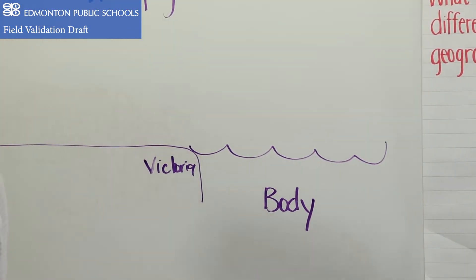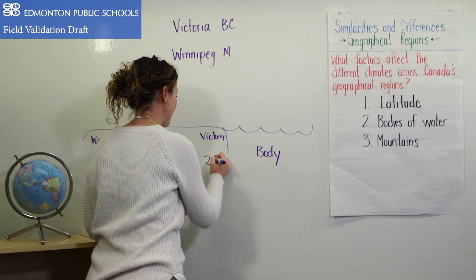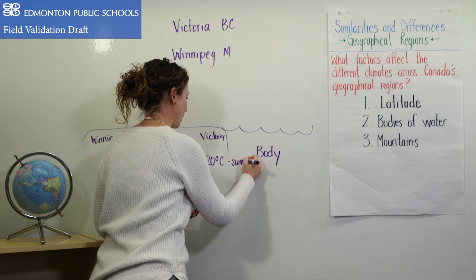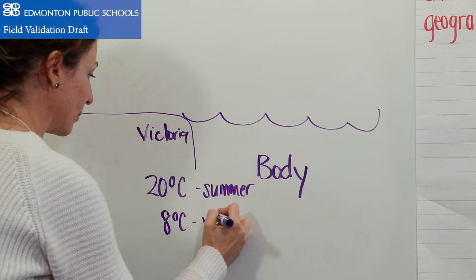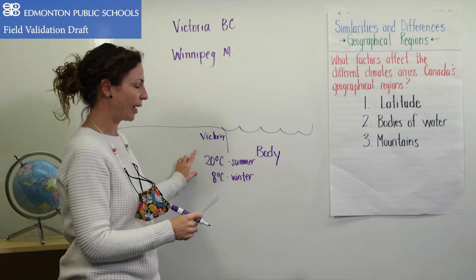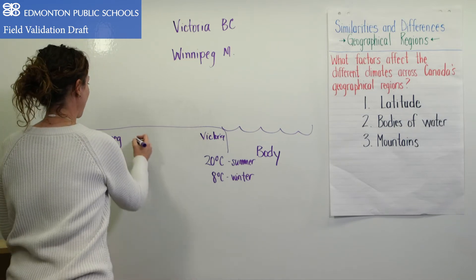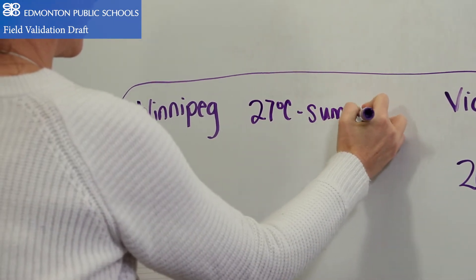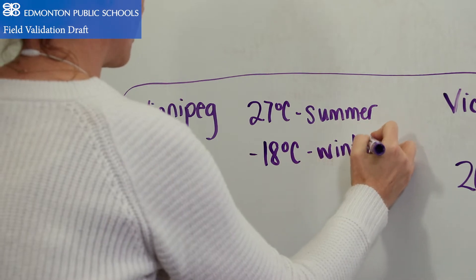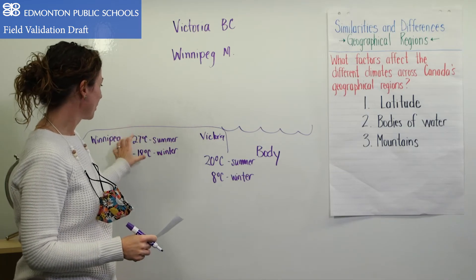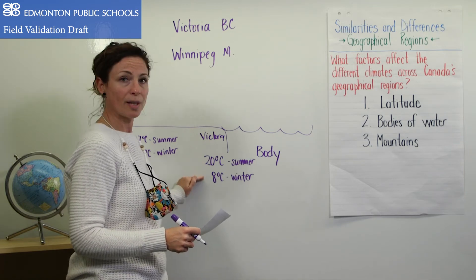I did a little bit of digging. The average temperature in the summer for Victoria is around 20 degrees Celsius, and the average temperature in winter is about 8 degrees Celsius. It's not super hot but definitely not super cold. Then I looked at Winnipeg. The average temperature for Winnipeg is about 27 degrees in the summer, and about minus 18 degrees Celsius in the winter. So Winnipeg's summer is quite warm but their winter is also quite cold, whereas Victoria has less difference between its winter and summer temperatures.